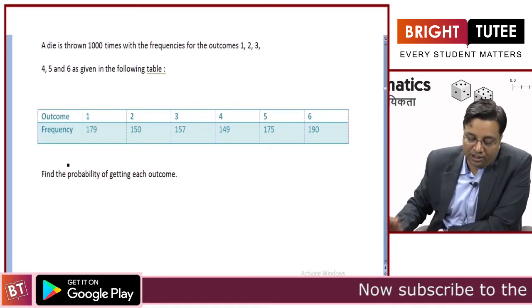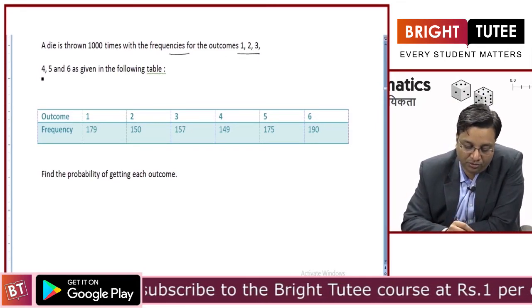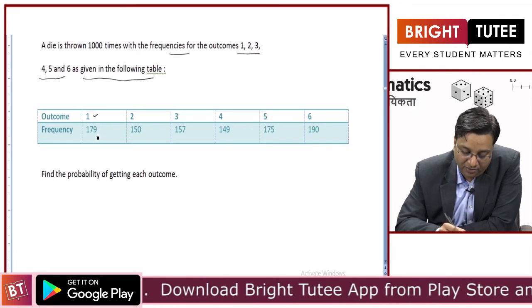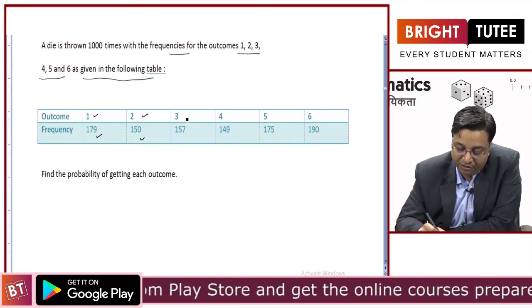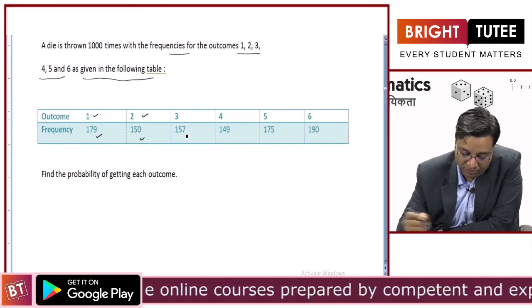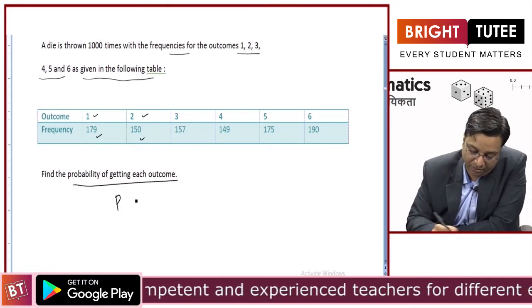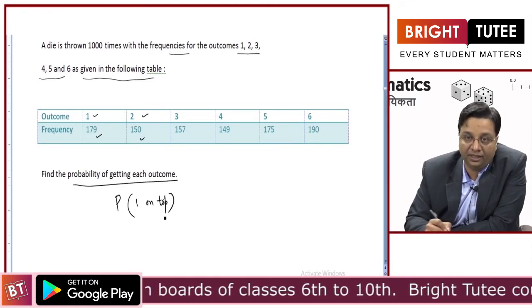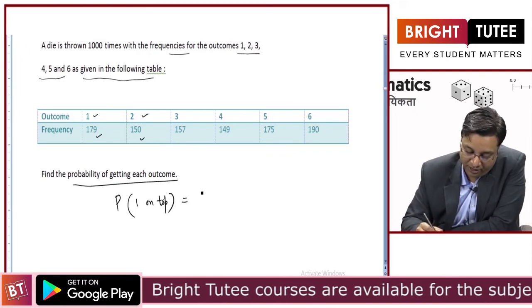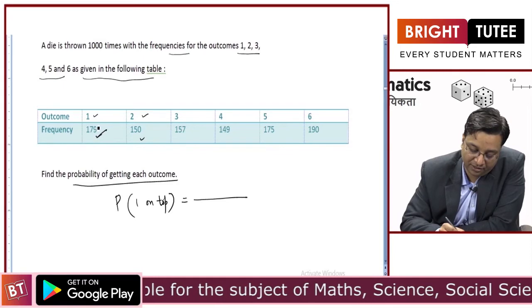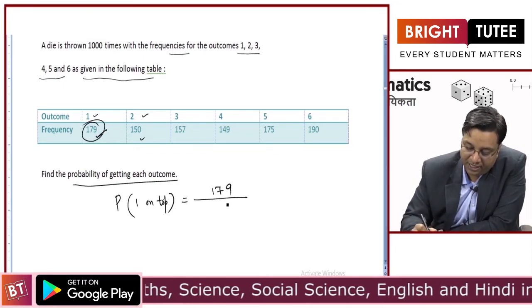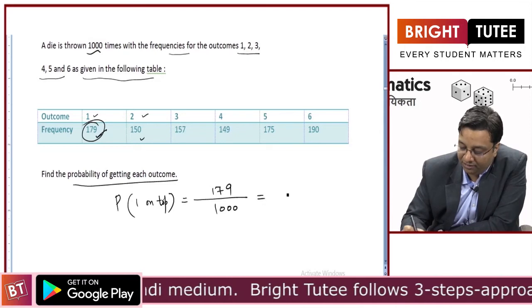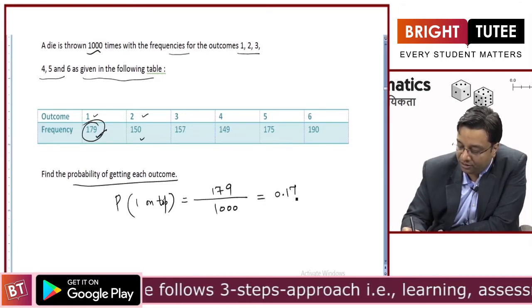A die is thrown 1000 times with the frequencies for outcomes 1, 2, 3, 4, 5, 6 given in a table. Outcome 1 occurred 179 times, 2 came on top 150 times, 3 came on top 157 times, and so on. Find the probability of getting each outcome. Probability of 1 on top equals 179 (number of times this event occurred) divided by 1000 (total number of times the experiment was performed) = 0.179.